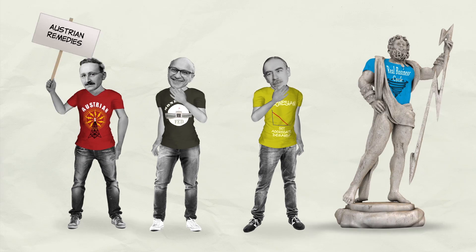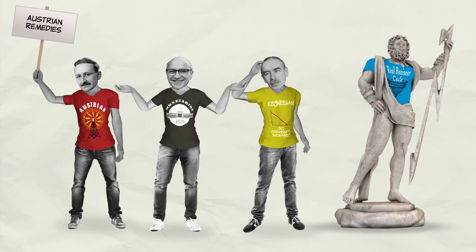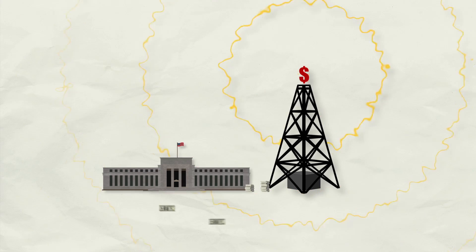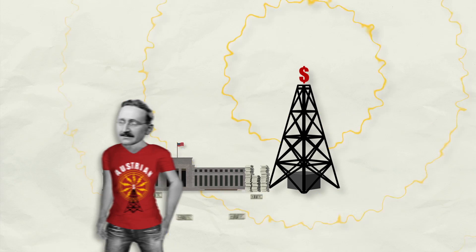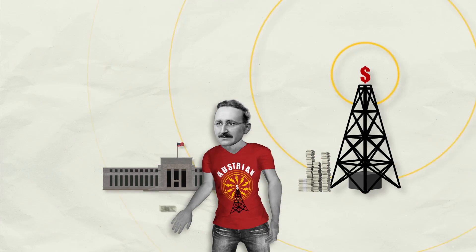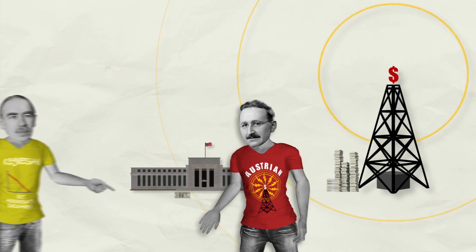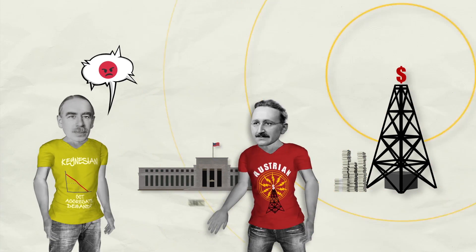So what's the Austrian solution? Well, typically Austrians favor a relatively small role for government because they see markets as working relatively well and governments as distorting market price signals. A lot of Austrians have also argued for relatively tight money, and they don't want the central bank to be trying to stimulate the economy with more credit or lower interest rates.